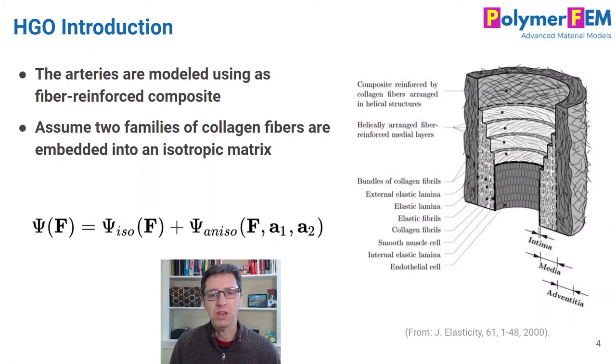So let's talk about the HGO model specifically. It thinks of the material as consisting of a matrix and then a set of discrete fibers. The energy function psi consists of two parts that are added together. It has an isotropic response which could be any hyperelastic material model you typically use - it could be a Neohookean, a Gent model, or whatever model you like. And then on top of that you add an anisotropic hyperelastic representation of the fiber contribution to the material.